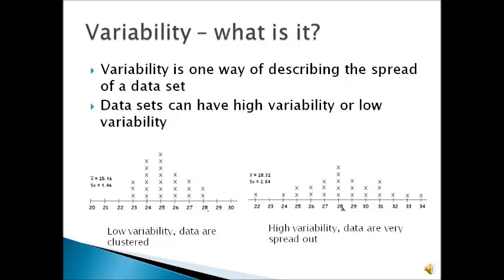In a data set with high variability, the data are very spread out. We see this in the sample on the right-hand side. In this high variability set, the standard deviation is much larger, and there is a much greater spread of the sample measurements further out from the mean of 28.32.